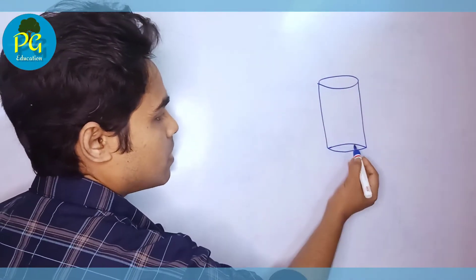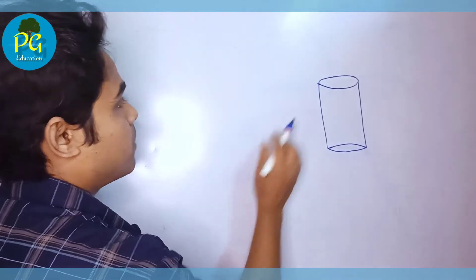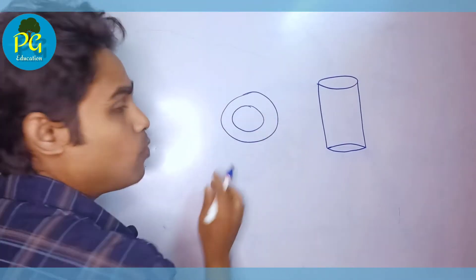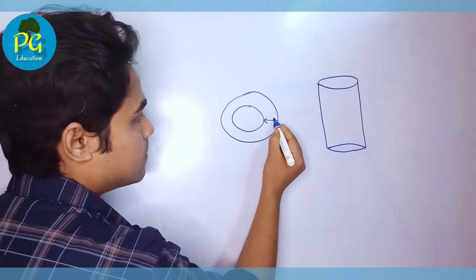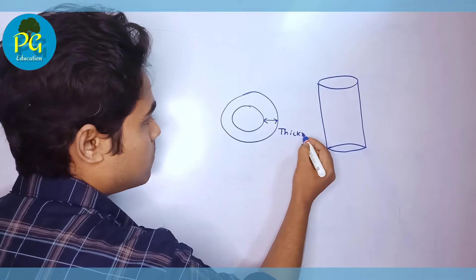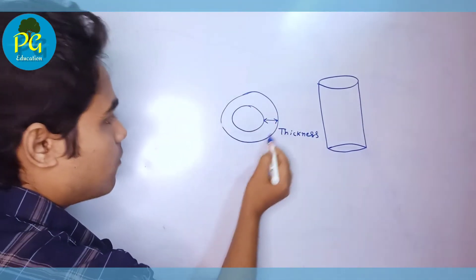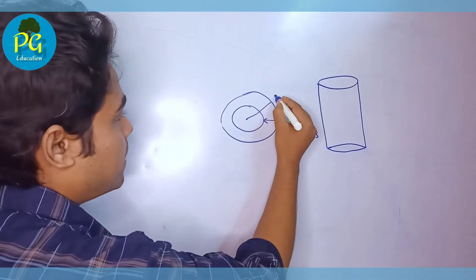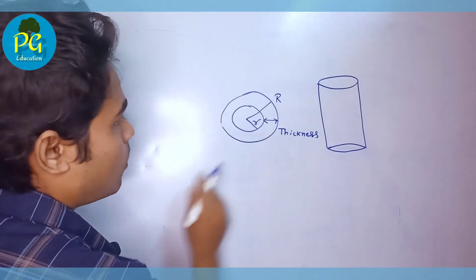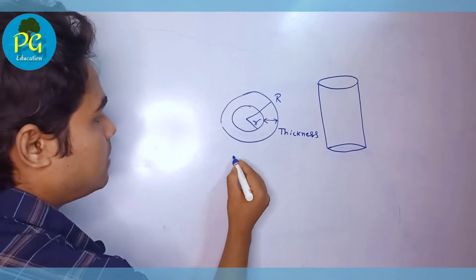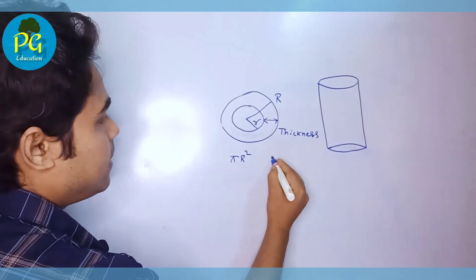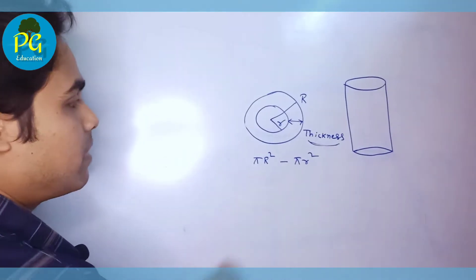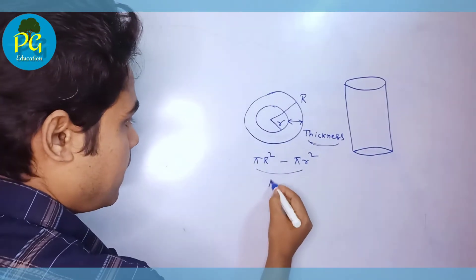It is a hollow cylinder — the base and top are circular in shape. If you draw this circular portion, it will look like this. This is called the thickness. Let us suppose the radius of the outer circle is capital R and that of the inner circle is smaller r. The area of the outer circle is pi R squared and the area of the inner circle is pi r squared. If we subtract pi r squared from pi R squared, we get the area of the thickness.